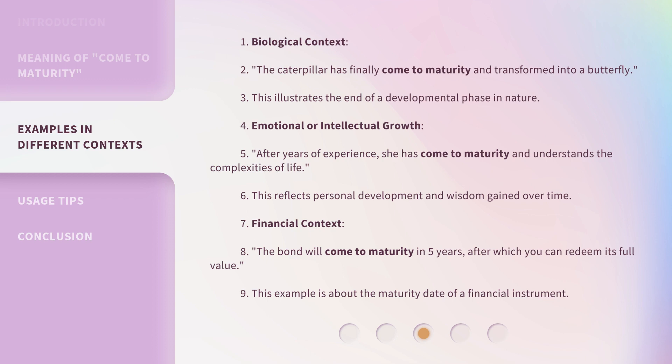Financial Context example: 'The bond will come to maturity in 5 years, after which you can redeem its full value.' This example is about the maturity date of a financial instrument.